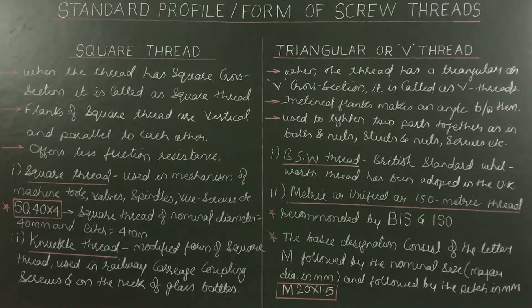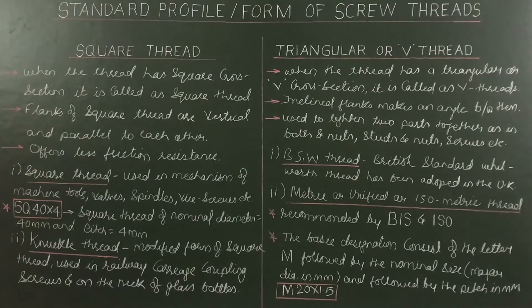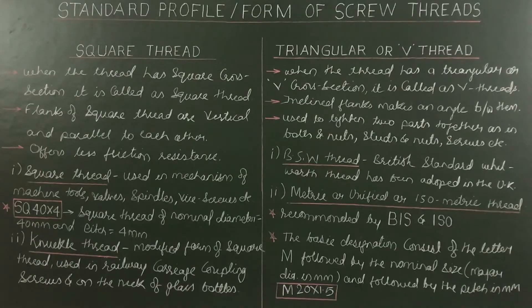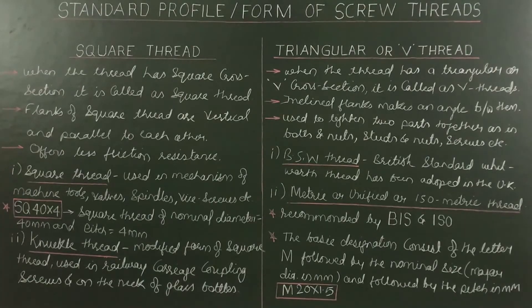BSW means British Standard Whitworth — it has been adopted as a standard form in the United Kingdom, where B stands for British, S for Standard, and W for Whitworth. Next is metric thread, also called unified or isometric thread. This type of thread is also recommended by BIS and ISO.